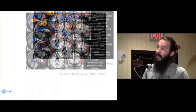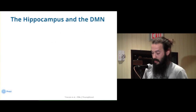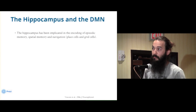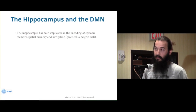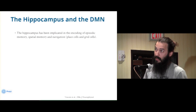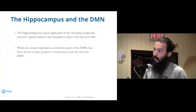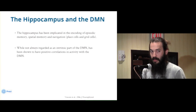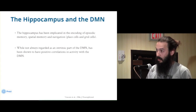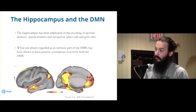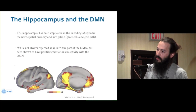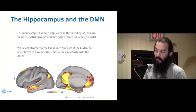My work has been looking at a different region of the brain: the hippocampus. The hippocampus is very important in memory — spatial memory, episodic memory, memories about the self, and also navigation. There's been a lot of work in rats looking at place cells and grid cells, which respond specifically to particular places. Not everyone would agree that the hippocampus is an intrinsic part of the default mode network, but there is growing evidence showing positive correlations between activity, including the medial PCC, ventromedial prefrontal cortex, and lateral parietal regions.